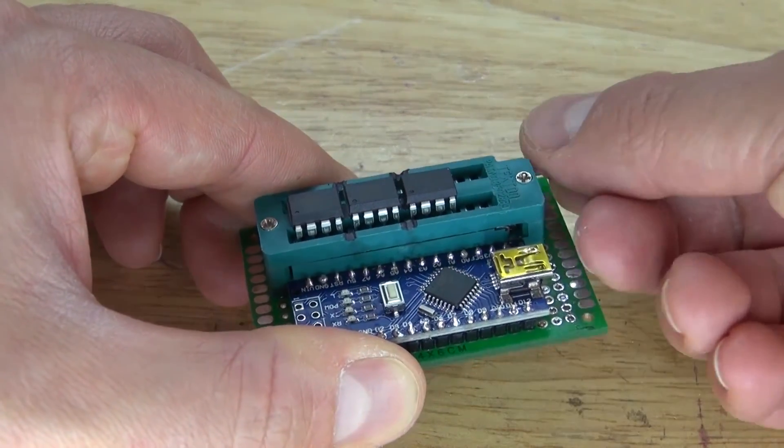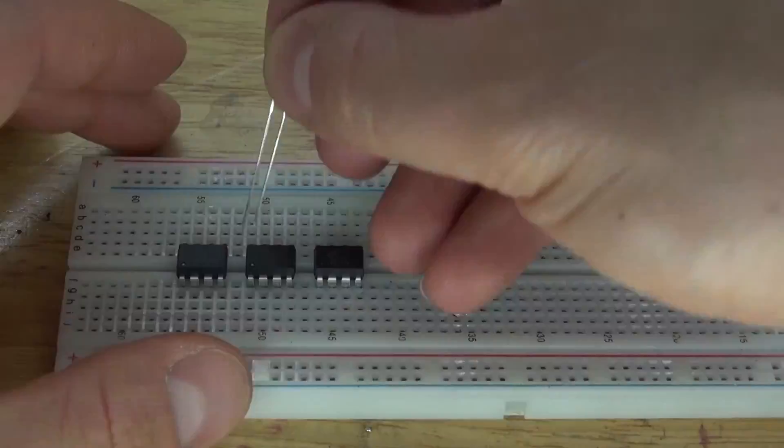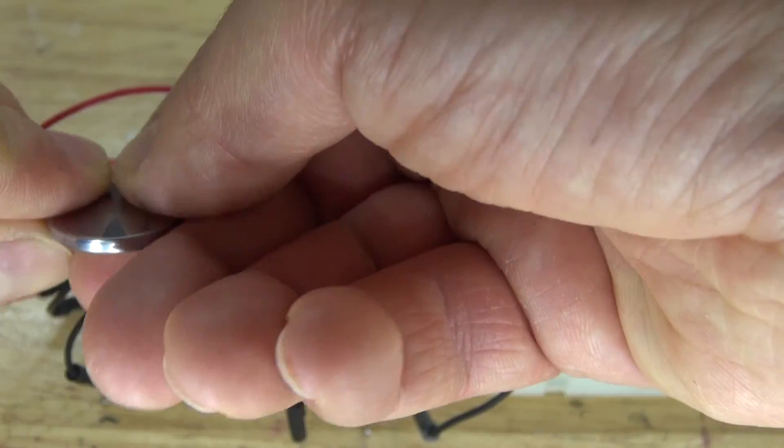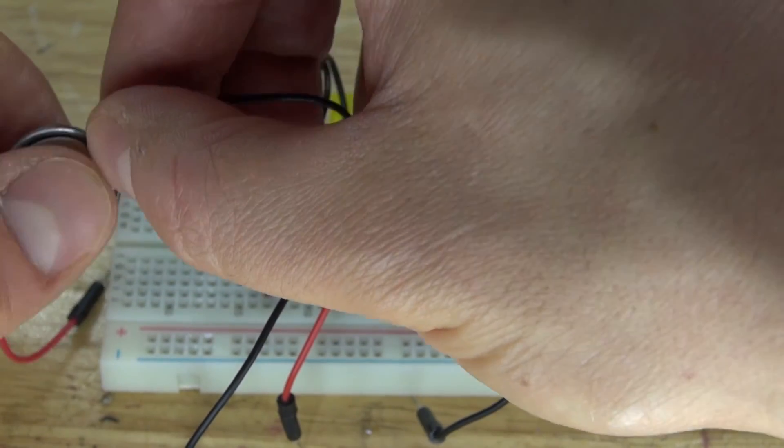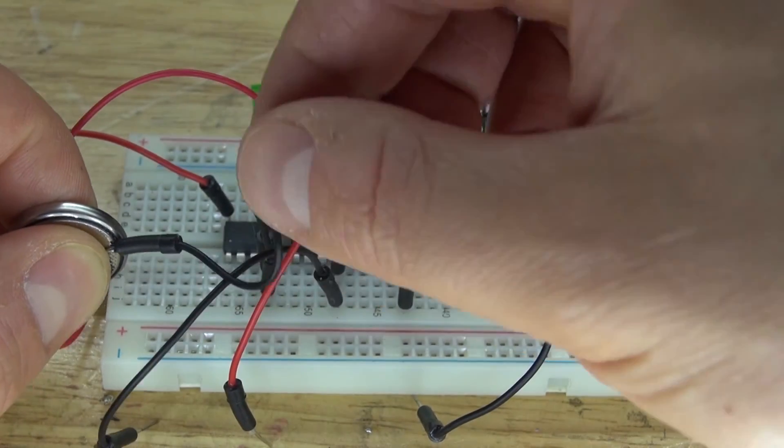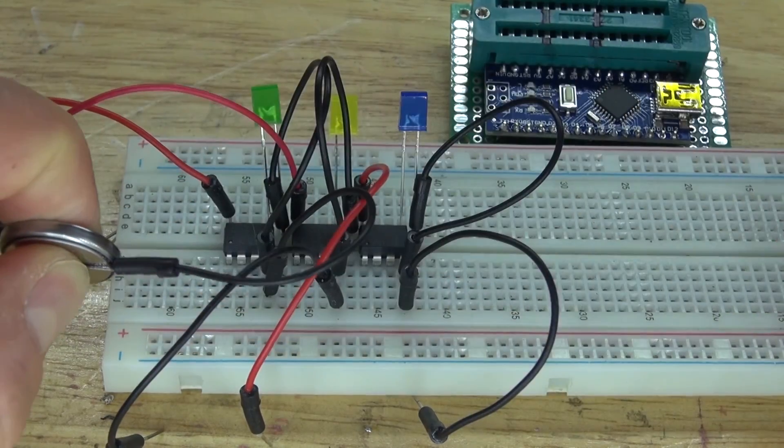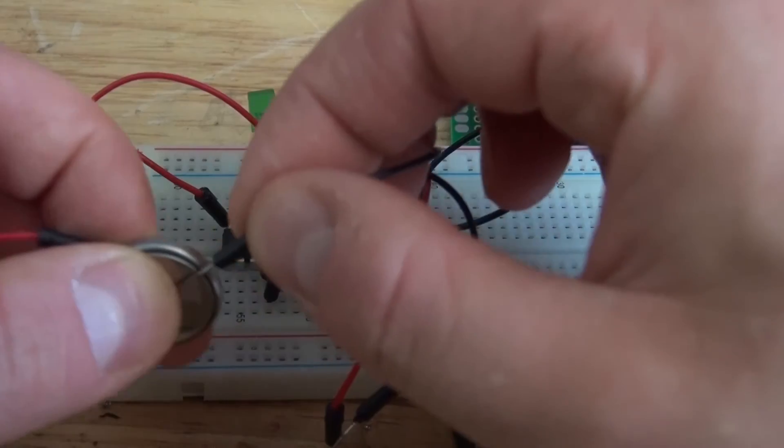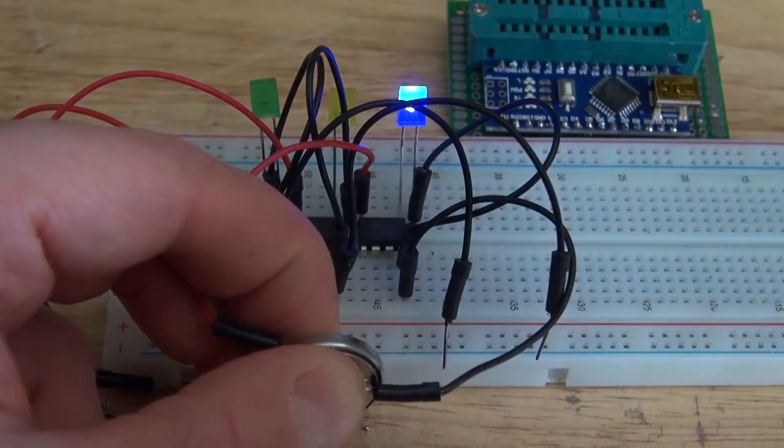And now let's go ahead and see if the ATtiny85 microcontrollers are programmed and see if they work. Place it into a perf board and make a simple circuit. Power it with a 3 volt button cell battery. And as you can see, the first ATtiny85 works. And now the second ATtiny85 works. And the third ATtiny85 works.